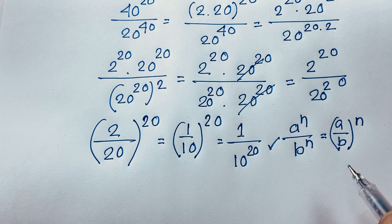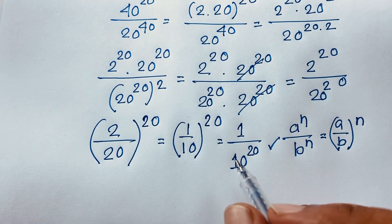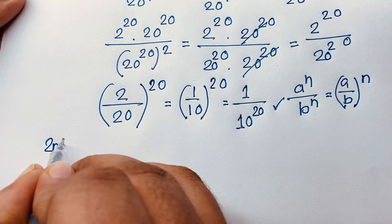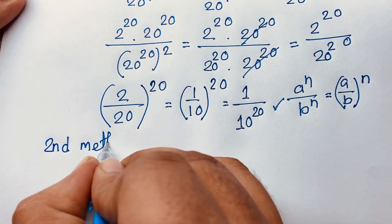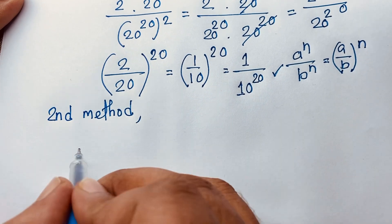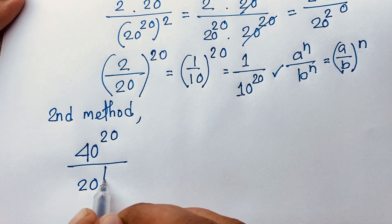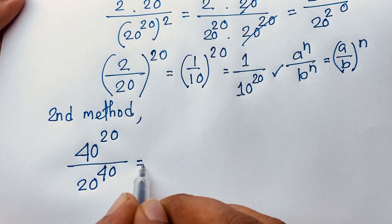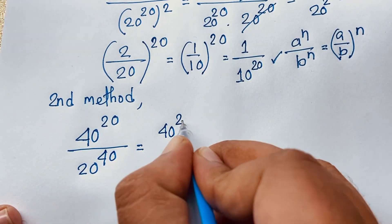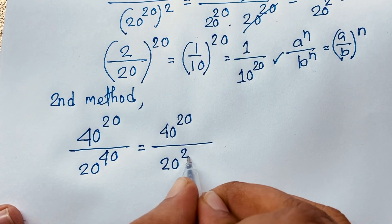This is our final answer for this exponential math problem. Now I will solve this question using a second method. Our question is 40 power 20 over 20 power 40. I take the denominator and rewrite 20 power 40 as 20 power (20 times 2).